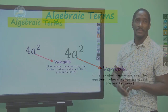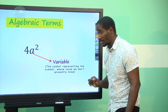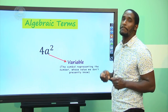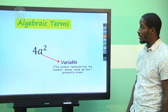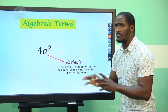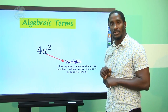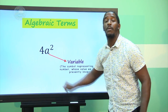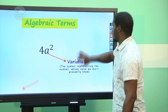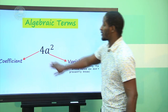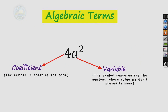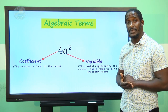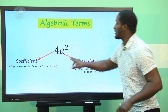With your algebraic terms, there are certain features we need to look at. The first feature is the variable — the symbol you utilize to represent a number whose value we don't presently know. For example, this A represents some number. I would hear students say that number is 1, but that is not necessarily true. This variable can take any value — it may be my age, 56.